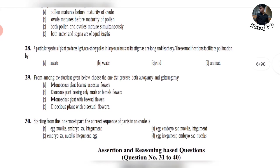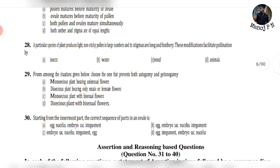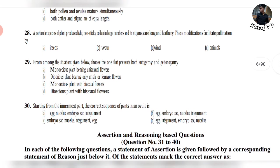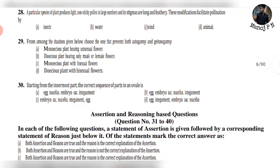Question 26: A particular species of plant produces light, non-sticky pollen in large numbers and its stigmas are long and feathery — this is wind pollination. The answer is option C.